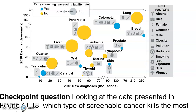Figure 11.18 looks at data on which types of cancer have early screening available and which are responsible for the highest mortality. It breaks this down by risk factors including alcohol, diet, gender, genetics, obesity, pollution, radiation, smoking, sun exposure, STIs, and viruses. Cancers shown in blue have early screening available; those in yellow do not. For example, testicular cancer has a relatively low mortality rate and early screening is available. Cervical cancer has several lifestyle risk factors associated with it and early screening is available. Ovarian cancer does not have early screening available.